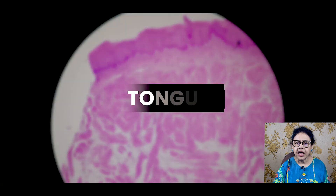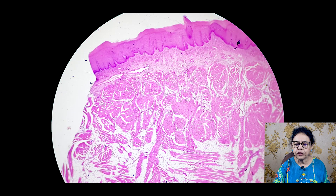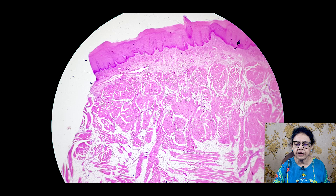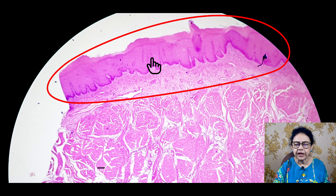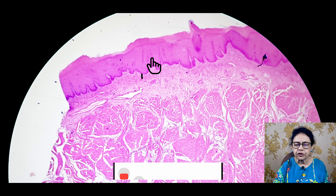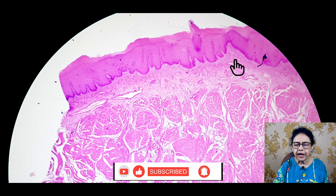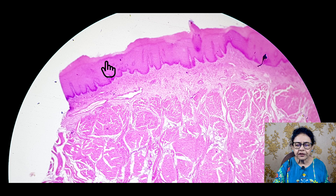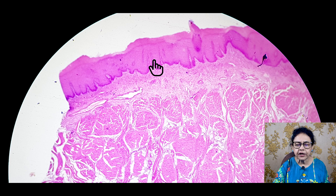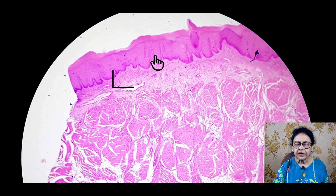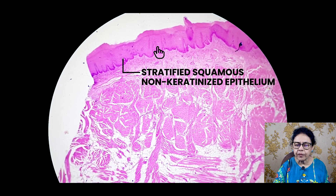This is the slide of tongue. How will you identify the slide of tongue? You will see our tongue is also very much rough than the other parts. So the mucous membrane of the tongue is so thick, like the border of a shari. You see, this whole thing is the epithelium. So what type of epithelium is it? It is stratified squamous non-keratinized epithelium.